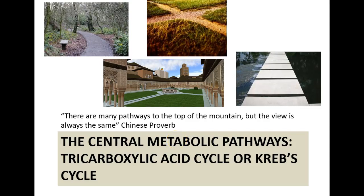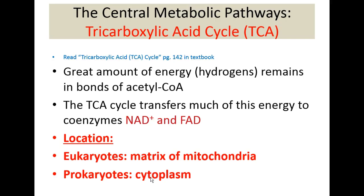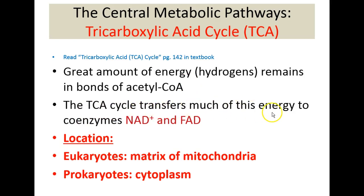This next PowerPoint will focus on the tricarboxylic acid cycle, also known as the Krebs cycle. At the end of the intermediate or transition step after glycolysis, pyruvate has been decarboxylated into a two-carbon compound called acetyl coenzyme A. Acetyl coenzyme A retains many hydrogen atoms which represent energy.